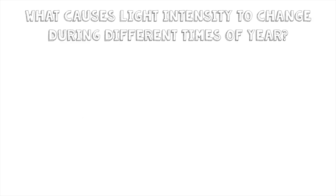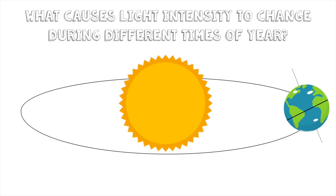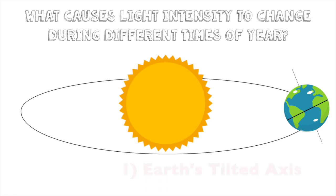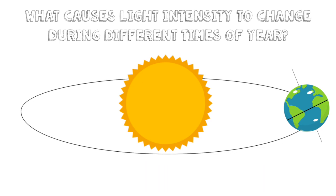What makes light intensity change during different times of the year? There are two main things: the tilt of the Earth and the Earth's orbit around the Sun. Compared to the plane of its orbit, the Earth is tilted at 23.3 degrees. In this picture, this would be June because the northern hemisphere is tilted towards the Sun, allowing it to get more direct light and making it summertime. The southern hemisphere is tilted away, so the rays are more indirect and it's winter in the southern hemisphere.